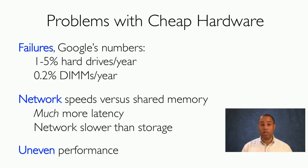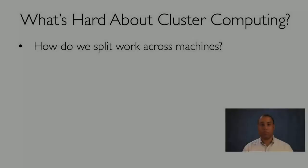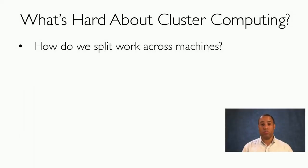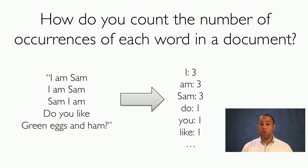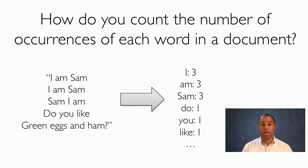These machines also have very uneven performance — some may be very fast, others very slow, sometimes because they're failing. So what's hard about cluster computing? One challenge is how do we split work across machines? Let's look at an example: how do we count the number of occurrences of each word in a document? Here we have the document: "I am Sam, I am Sam, Sam I am, do you like green eggs and ham?"